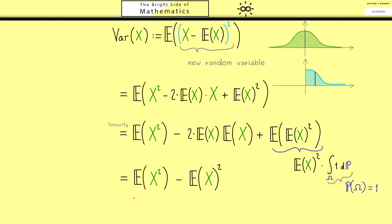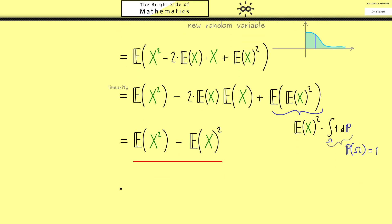This gives us an alternative definition for the variance of x: Var(x) = E[x²] − (E[x])². This is not hard to remember — it's the expectation with the square inside minus the expectation with the square outside. So if you already know E[x], to calculate the variance you just need to calculate the expectation of x squared. Therefore we need the assumption that this expectation — the abstract integral of x squared — exists.